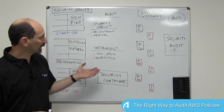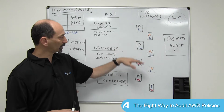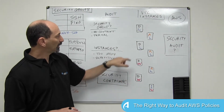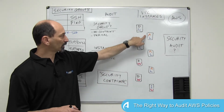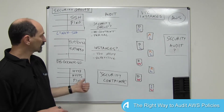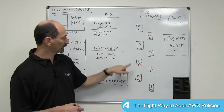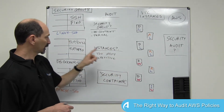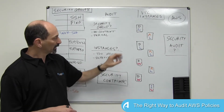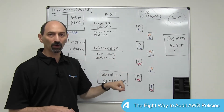Conversely, you could look at the instances. You could look at every one of these instances and see that on this one you have a combination of the orange security group and the blue security group, and on this one you have a combination of the black security group and the red security group. And you can review each instance on its own.